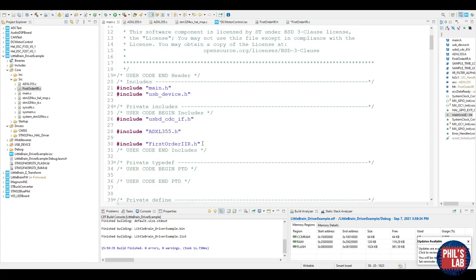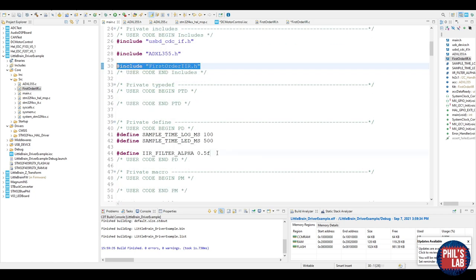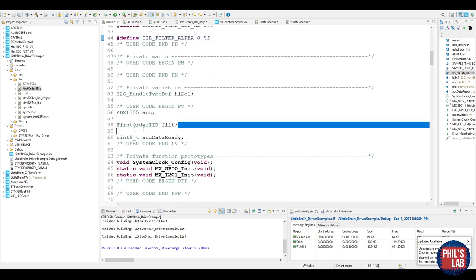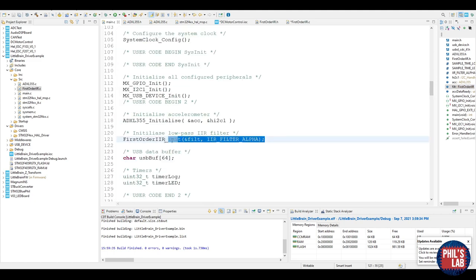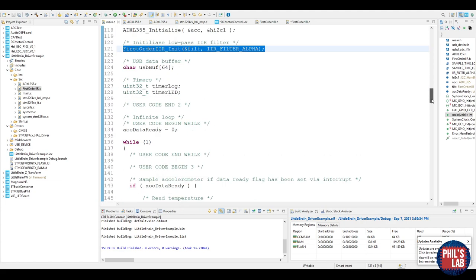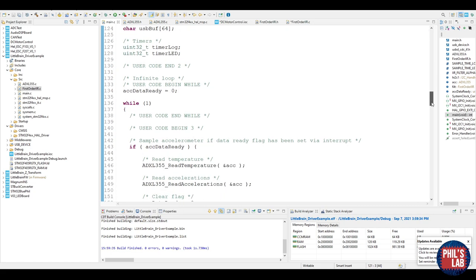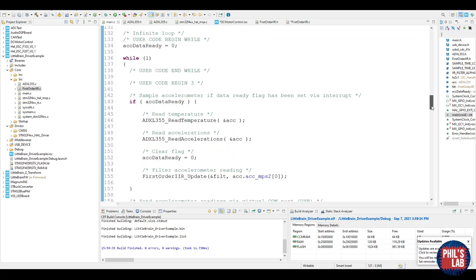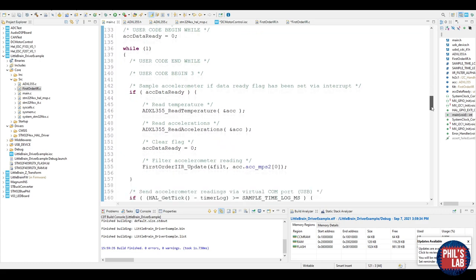Going into my main.c, I need to of course include my new header file and my new code. I am defining my IIR filter alpha to about 0.5, somewhere in the middle just as a starting value. Then of course I need to define my struct which I'll call filt. I need to initialize my low pass filter so I pass it my alpha value and that'll then set also the output to 0.